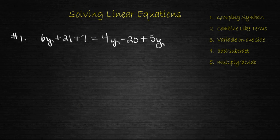Let's look at example number one. If we have 6y + 21 + 7 = 4y - 20 + 5y, the first thing that I always check for is that I get rid of all my grouping symbols. Because this equation doesn't have one, I don't need to worry about it. And when we go to combine like terms, we've got two constants on the left side, so we'll need to combine those and we get 6y + 28.